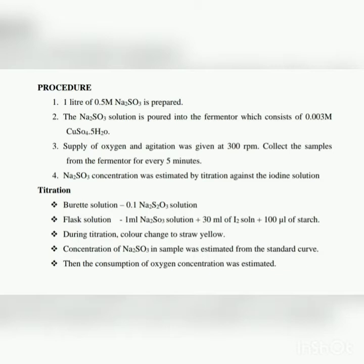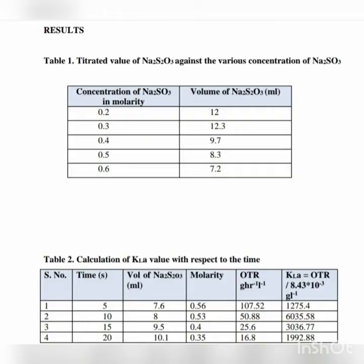Step 4 - sodium sulfite concentration is estimated by titration against iodine solution. Burette solution: 0.1 M sodium thiosulfate. Flask solution: 1 mL of sodium sulfite sample + 30 mL of iodine solution + 100 μL of starch solution. During titration, color changes to straw yellow. Concentration of sodium sulfite in the sample is estimated from the standard curve, and oxygen consumption is then calculated.